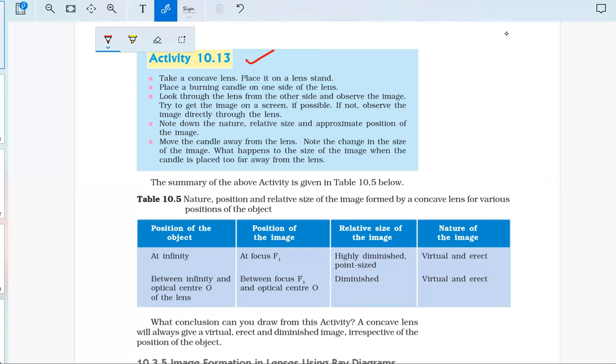Look through the lens from the other side and observe the image. Try to get the image on screen if possible. If not, observe the image directly through the lens. Note down the nature, relative size, and approximate position of the image.